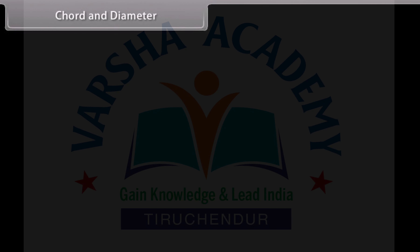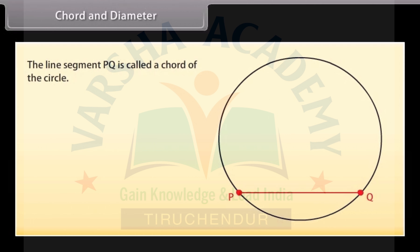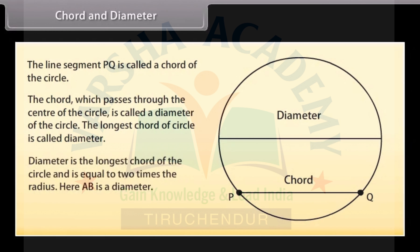Chord and diameter. If you take any two points on the circle, say P and Q, and join them, then the line segment PQ is called a chord of the circle. The chord which passes through the center of the circle is called a diameter of the circle. Diameter is the longest chord of the circle and is equal to two times the radius. Here we can see that AB is a diameter.